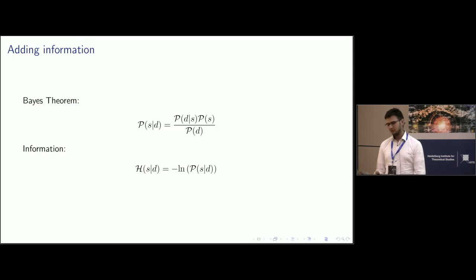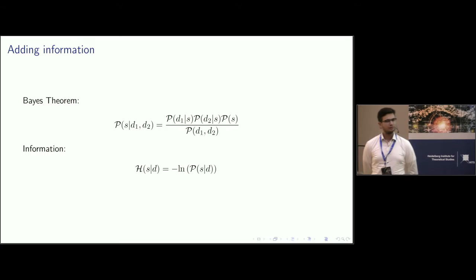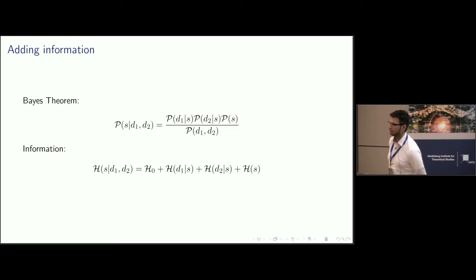So we now don't have only one data set, but we have two. So what happens is we just have to multiply the individual likelihoods together and then we can infer what the individual data sets tell us about the reality on the sky given the prior knowledge. So in terms of information, this looks like this. There we just have to add the individual terms. So we have this H0 which is a constant which does not depend on the signal. And then we have the information from one instrument, the information from the other instrument, plus the prior information. So we just have to add them up. And this describes the problem.